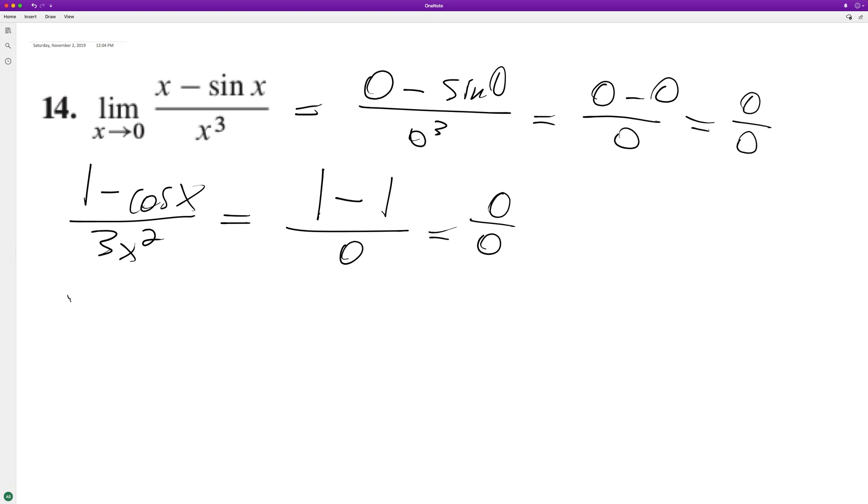So we'll take the derivative again. Derivative of 1 is 0. Derivative of cosine is negative sine, so we get negative negative, it becomes just positive sine x. And then we get 6x. Try plugging in 0 again. We get sine of 0 over 6 times 0, which is 0 over 0.